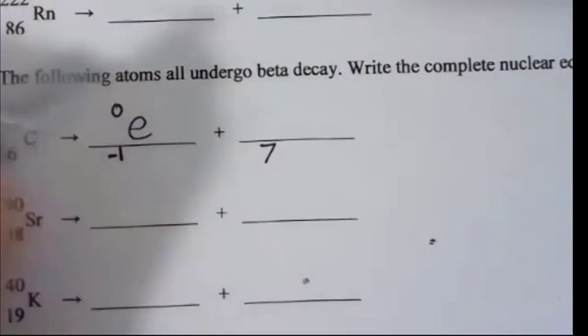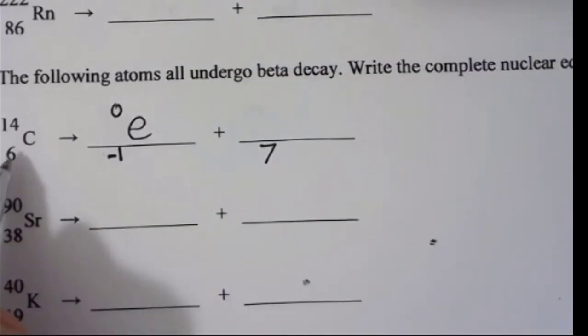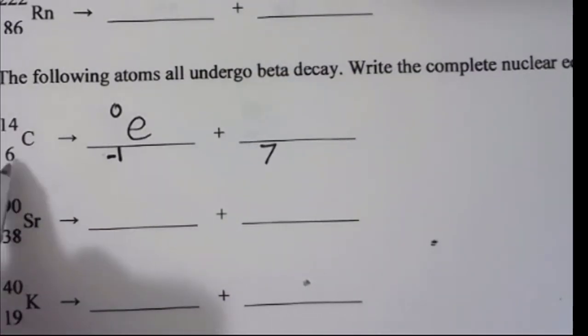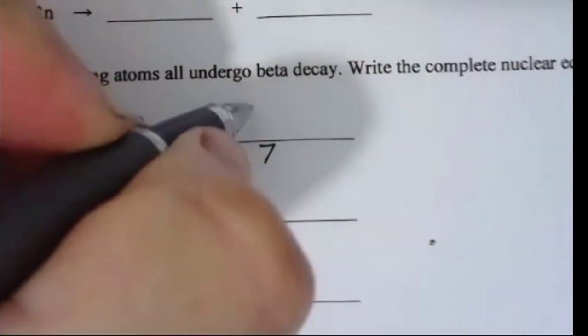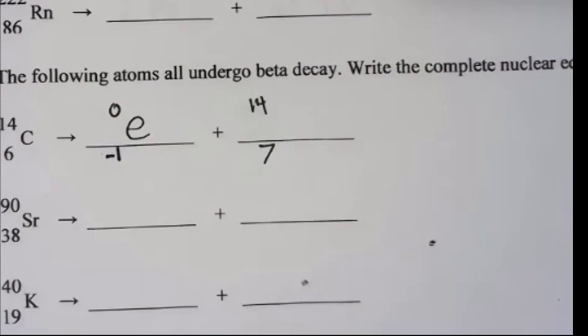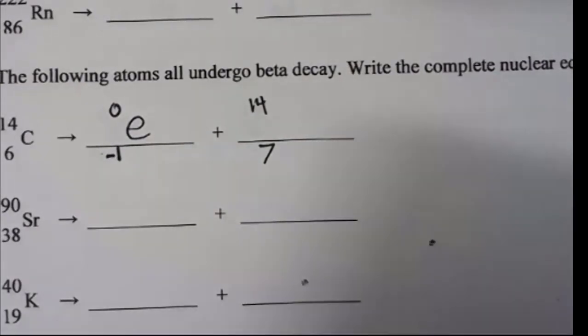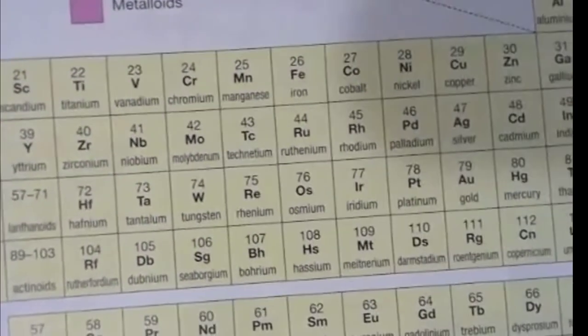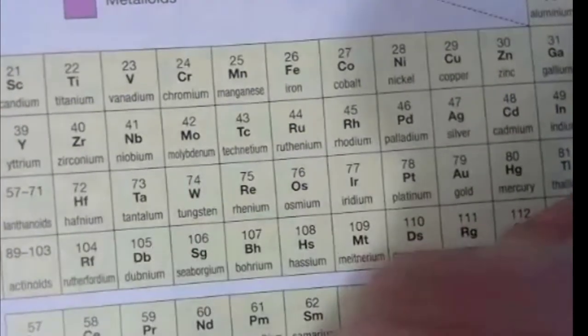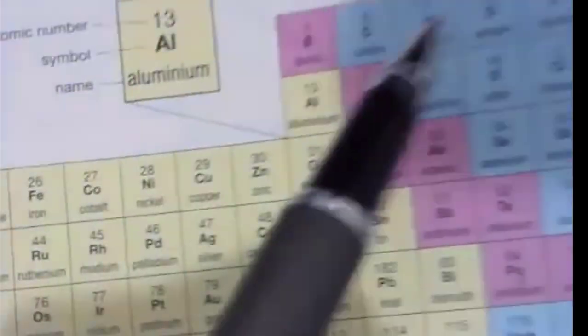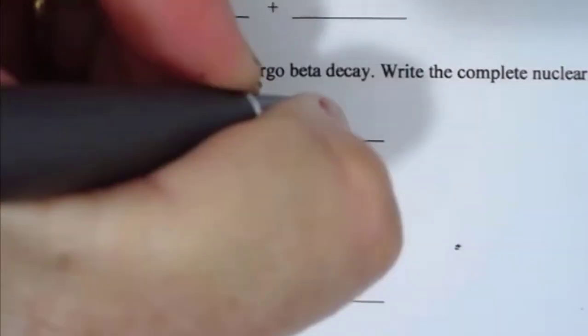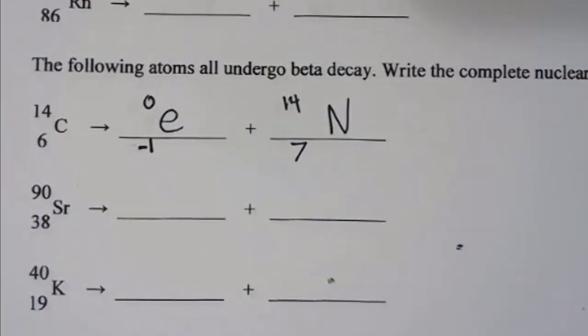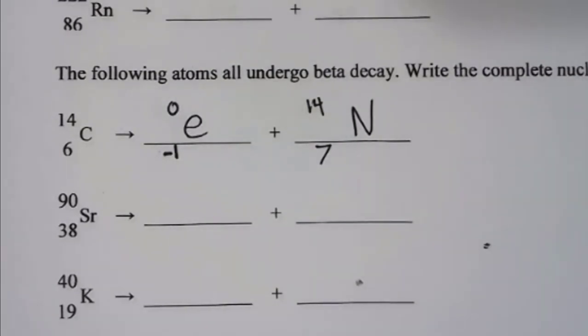The rule with beta decay is the atomic number goes up by one and the mass stays the same. We check the periodic table for element number seven, which is nitrogen.